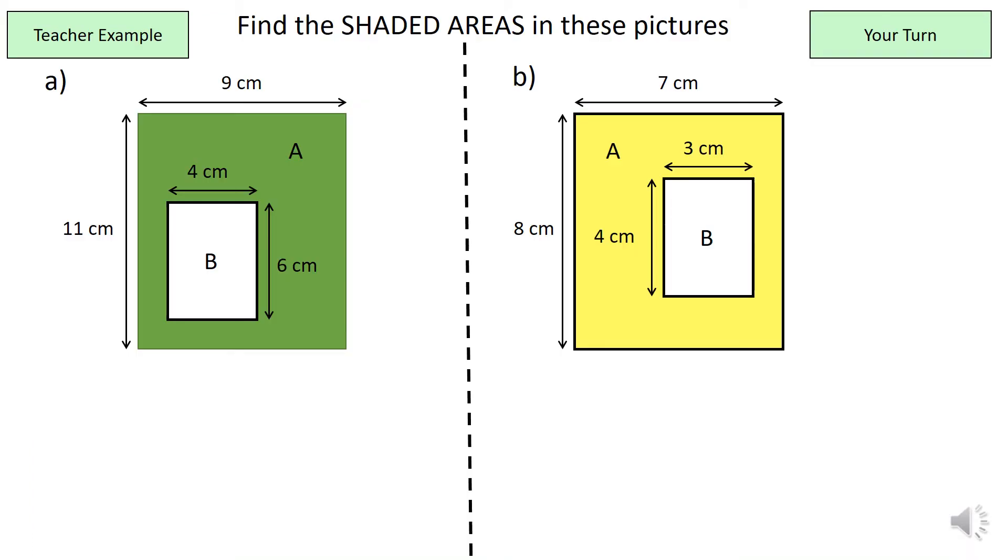couple of easy examples for the most basic of problem solving involving area. And this is to find the shaded areas in a shape. If we look at A, the green shape, we are looking for the area of just the green section. And the way we find the area of this is, first of all, I've labelled the green section shape A and the white box within it shape B. So, we need to find the area of each and the area of shape A is going to be 9 times 11 which is 99 centimeters squared and the area of shape B is 24 centimeters squared. Now, because we don't need the area of shape B, we just need the green area, we can just subtract 24 from 99 and that will give us 75 centimeters squared.